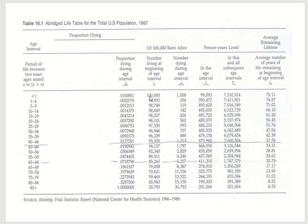I'm going to show you how to do the calculation. First, out of this 100,000, you calculate how many are going to die in that first interval. To know how many die in that interval, you use the age-specific death rate. You multiply the age-specific death rate by the number at the beginning of the interval, and that gives you how many died in that interval.